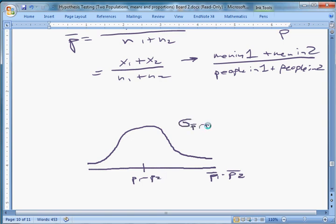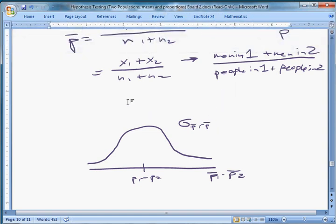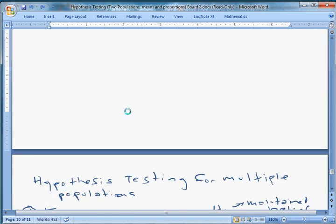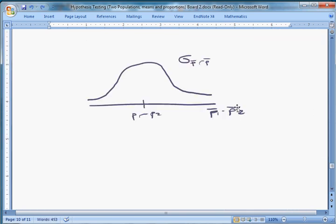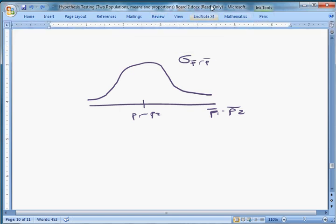P bar 1 minus P bar 2 equal to, oh, did I lose something? I did a little bit. There we go. So we have this, this is the sampling distribution that I'm drawing now. Okay, I lost my pen. Let's see if I can work this out anyway. The standard deviation is going to be equal to...